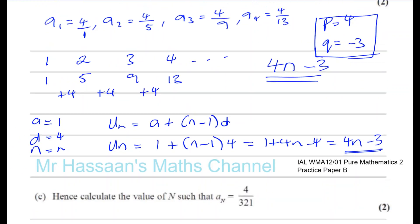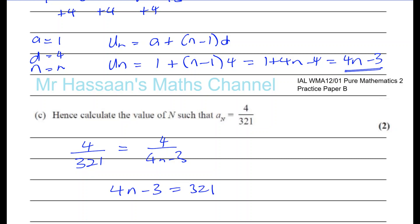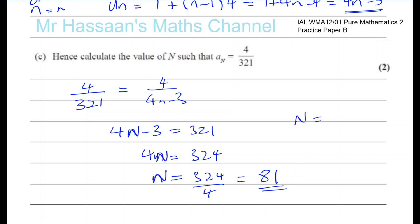Part c says: find the value of n such that aₙ = 4/321. Using our formula aₙ = 4/(4n − 3), both numerators are 4, so we just need the denominator to equal 321. Solve: 4n − 3 = 321, so 4n = 324, and dividing by 4 gives n = 81. So when n = 81, you get that value.